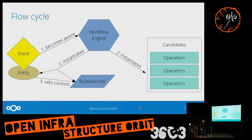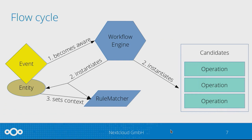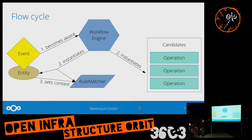The flow cycle, visualized: we have an event that happens, represented by this entity. It fires, and the workflow engine becomes aware of it via an event listener. It then instantiates the different components. The operation candidates are those configured for the event that was fired. The entity sets the context, giving more information to the service called the rule matcher.